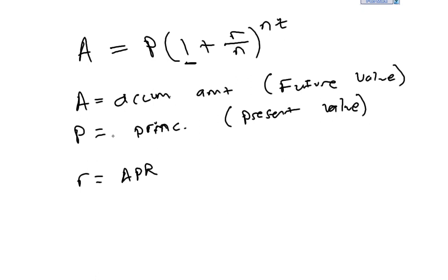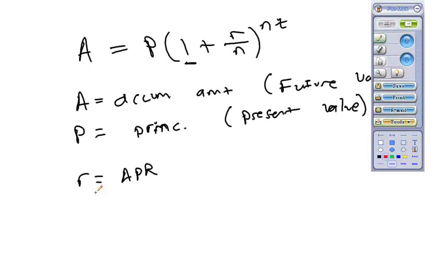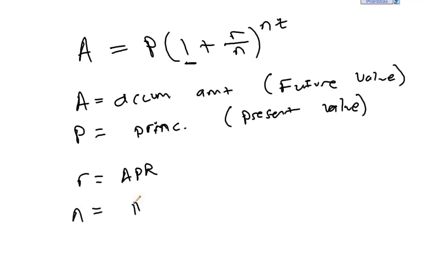So we take the APR and we're actually dividing it by n. So what is n exactly? Well, n is the number of compoundings per year. In this case, we had n equals 12.